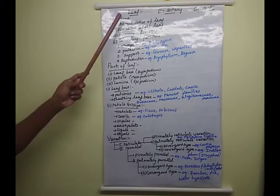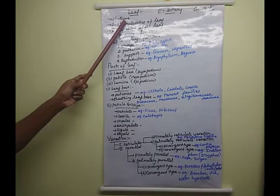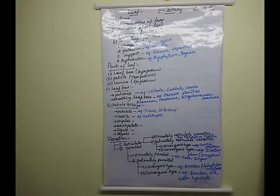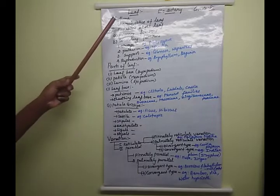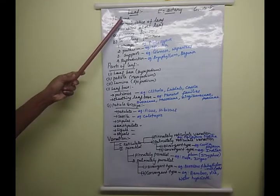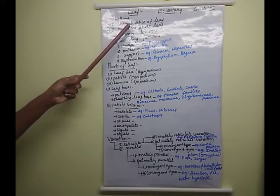What does the term 'phyllome' mean? The leaves of the plant, taken together, are called phyllome. The leaves of the plant together are known as phyllome.